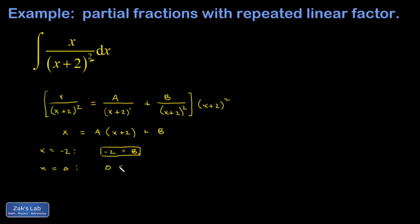I get 0 = 2A + B, but I know B is -2. So 0 = 2A - 2. Add 2 to both sides and divide by the coefficient of A, and I get A = 1.